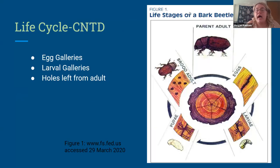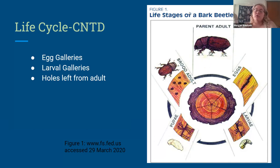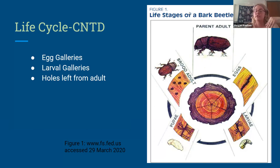Here's a chart showing the life cycle. At the parent stage, they crawl into the tree, leave egg galleries that are uniform in width, mate, lay their eggs, and exit. The larvae create larval galleries at right angles to the egg galleries, increasing in size as they eat their way out of the tree. They pupate, overwinter in these galleries, and then exit the tree leaving holes.